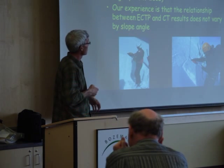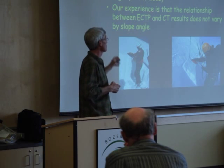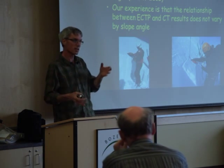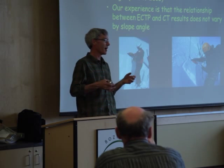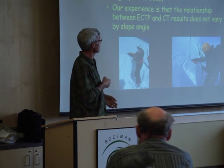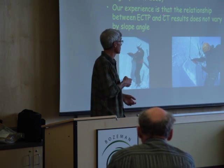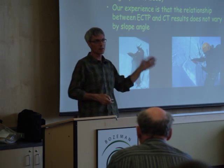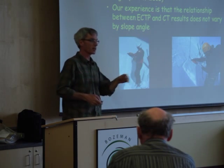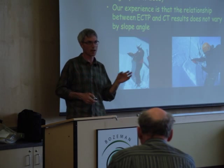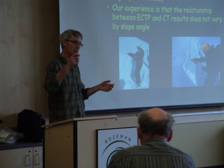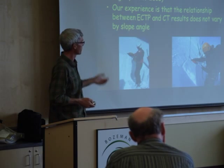We've seen that ECTP results are relatively independent of slope angle, and our experience is that the relationship between ECT and CT results doesn't seem to vary by slope angle. With most of our tests, CTs are a tap or two less than the ECTs, and we don't see a change with slope angle. I was challenged on this by Ned Bear, who said he really thought CT results vary a lot by slope angle because that's initiation, but ECT results don't because that's propagation.